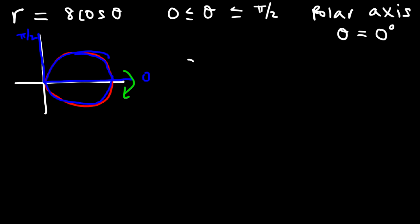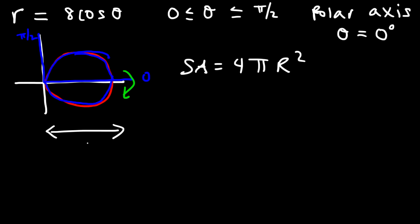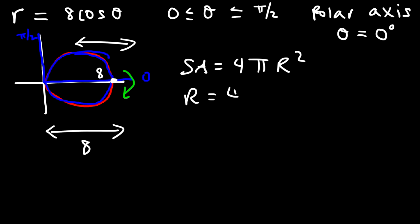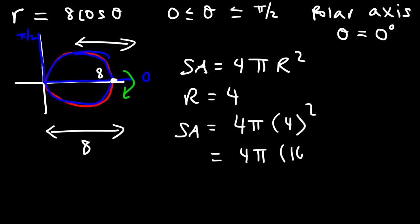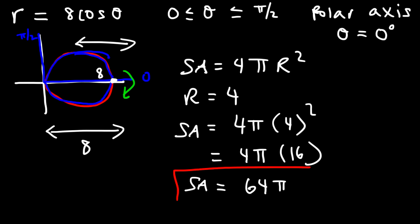Once again, we can calculate the surface area using the equation 4 pi r squared. The diameter is equal to 8, based on what we see — the point is 8 units away from the origin — so the radius is half of 8, meaning capital R is 4 units long. Therefore the surface area is going to be 4 pi times 4 squared. 4 squared is 16, and 4 pi times 16 is 64 pi. So the surface area of the sphere is 64 pi square units.